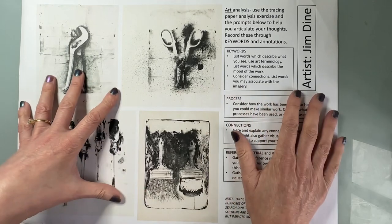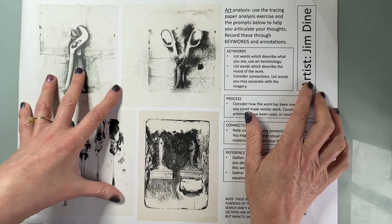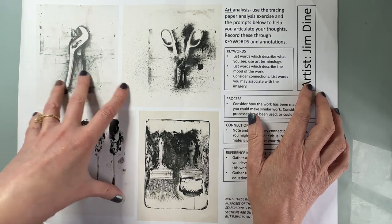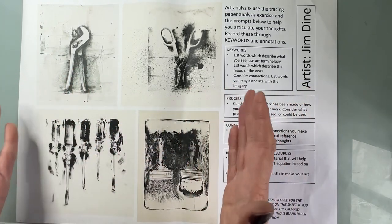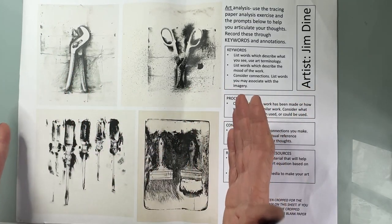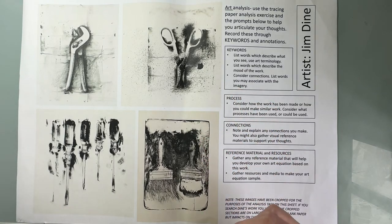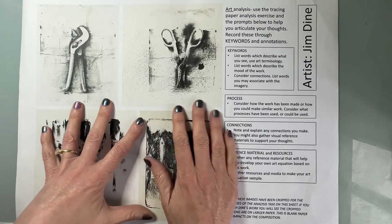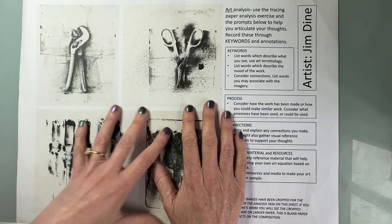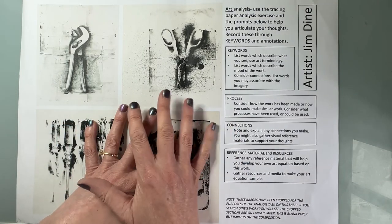The work we have here is by an artist called Jim Dine, an American artist born in 1935 in Ohio. This is just a selection of his work — it does not represent his life's work. I've selected these particular pictures on a common theme, so I've been focused when gathering my work.